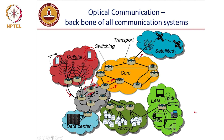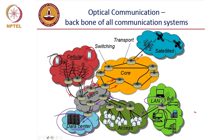What about data centers? When you are using the internet or cloud services, all your information is stored in data centers which could be physically at a remote location. Every time you connect from your laptop to a data center, you make a connection from your local area network to an access point, and depending on where the data center is located, it is routed through the metro to the data center and back. This communication is also carried out through an optical fiber.